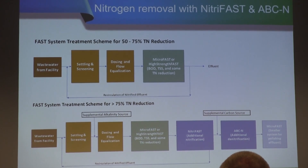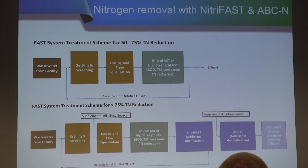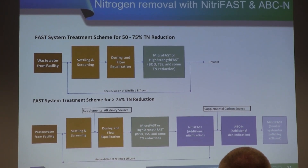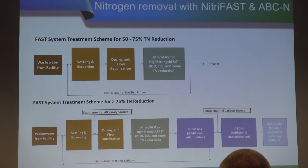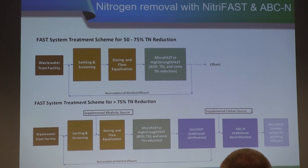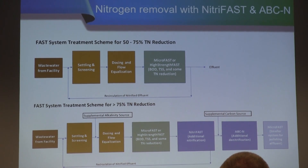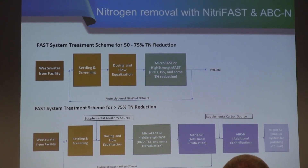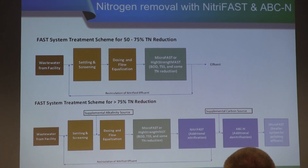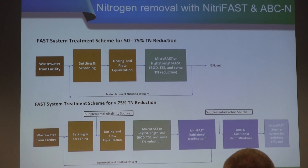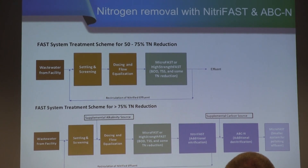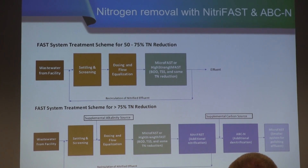Here's a brief example comparing two treatment schemes. The top flowchart shows a commercial facility where wastewater goes through a settling and screening tank for bulk solids removal, followed by dosing and flow equalization, then a secondary treatment unit. This setup is typically good for 50 to 75 percent total nitrogen removal. We sometimes suggest recirculating a portion of treated water at the outlet back to the inlet, which also helps some with total nitrogen reduction.